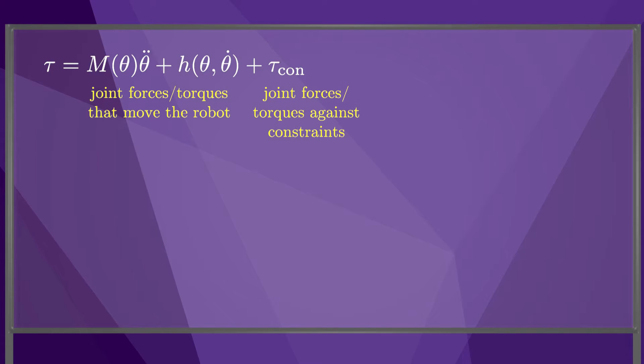Since the constraints are workless, the dot product of the torques against the constraints with the joint velocities must be zero. We also know that the velocity constraints have the form A theta dot equals zero, so therefore the constraint torques must be a linear combination of the rows of A, where the k vector of coefficients lambda is called the vector of Lagrange multipliers.